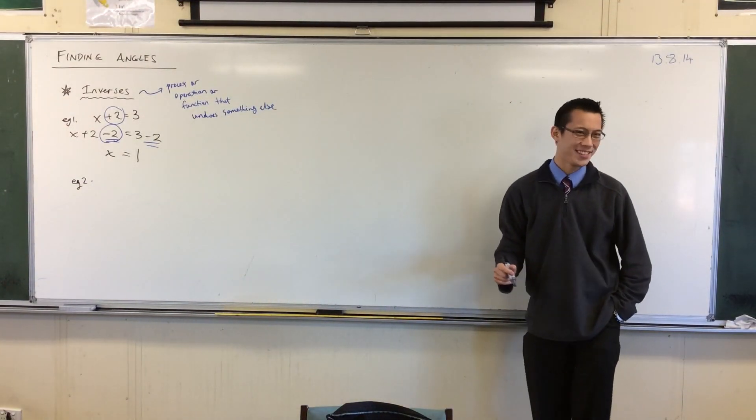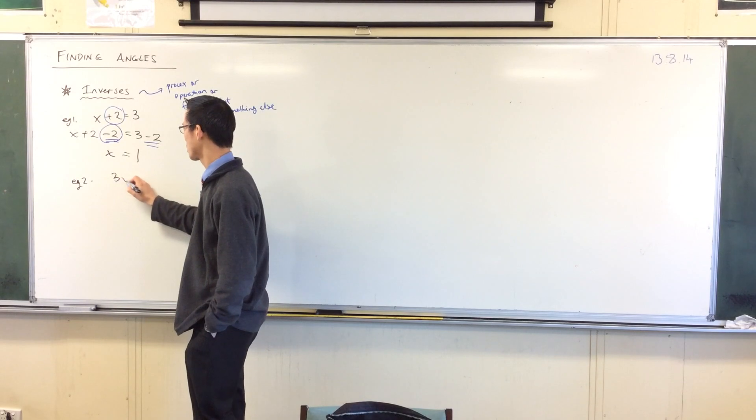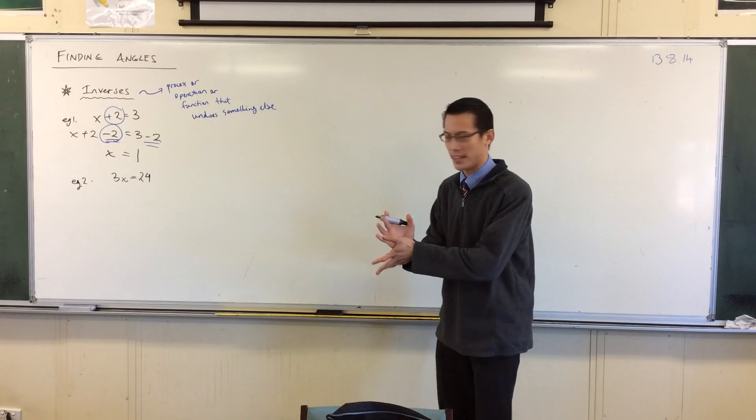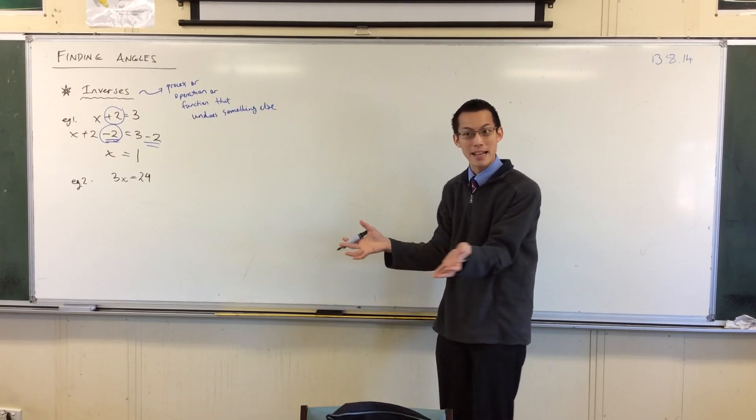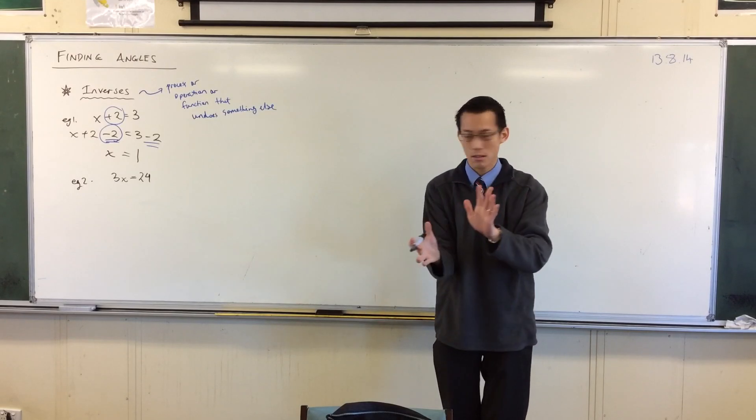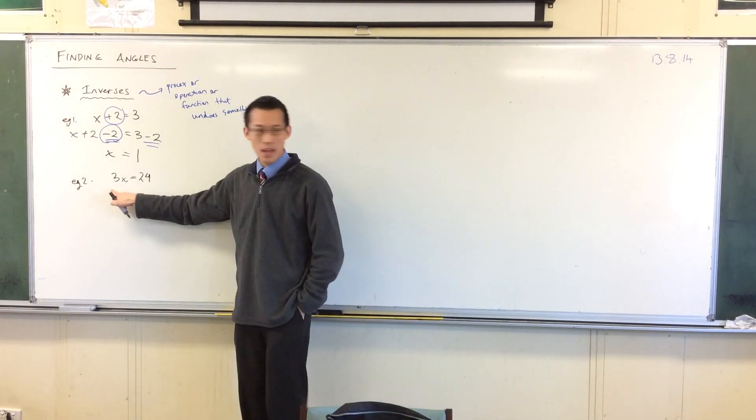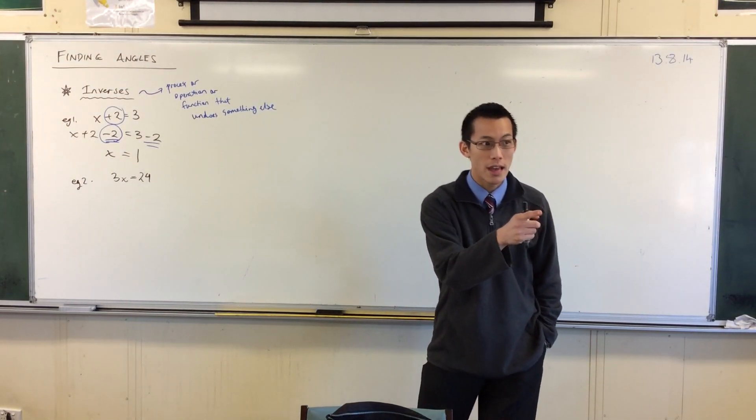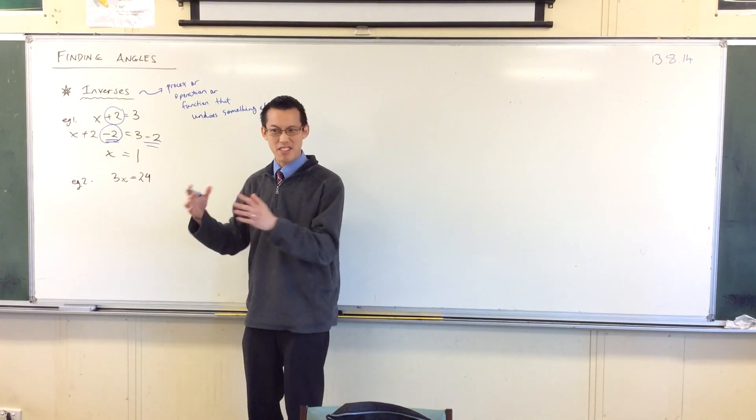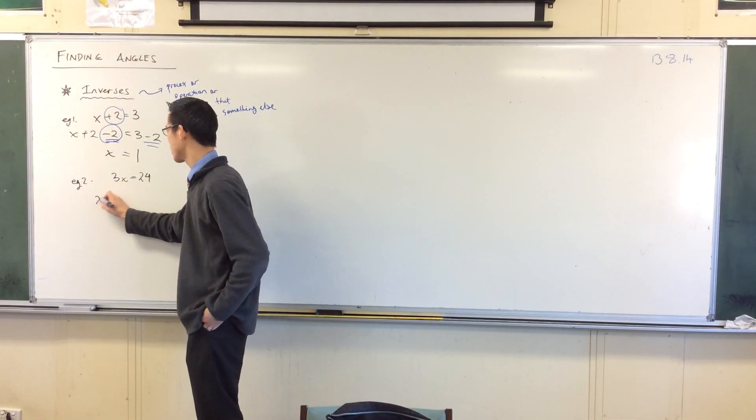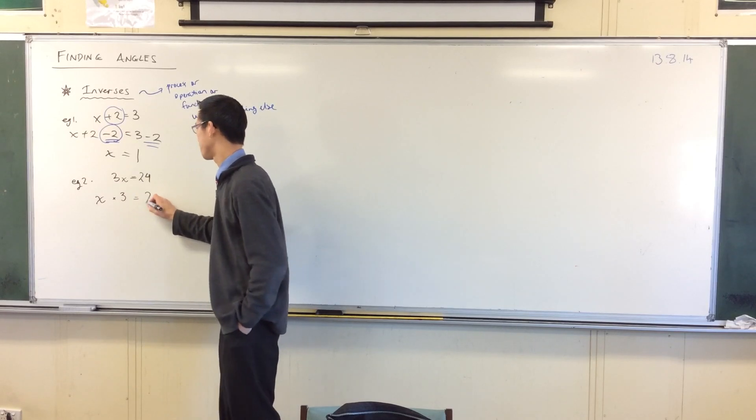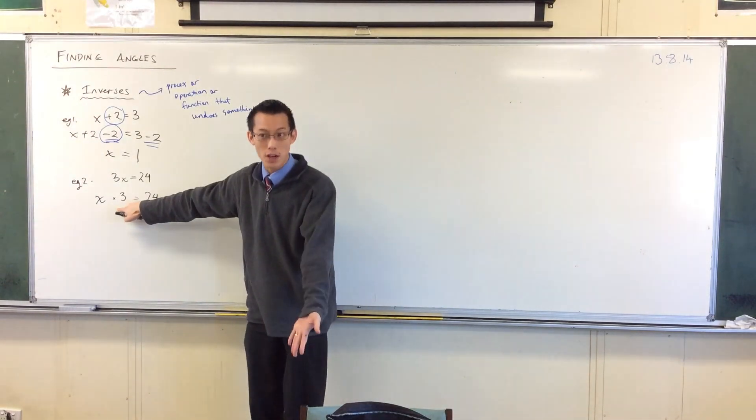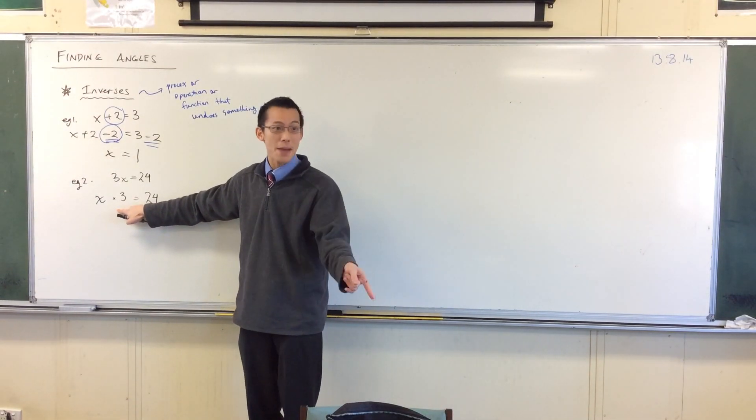What if I gave you 3x equals 24? Again, what we've got here is there's only one thing we need to do to get x by itself. What should I do? Now, to help you see what's going on, I'm going to show you that 3x is actually short for, what's it short for? 3 times x. Now, rather than write 3 times x, I'm actually going to write x times 3. You'll see why in a second. Because, yeah, you see, the operation is times 3, so the inverse of times 3 is divided by 3. It's exactly right.